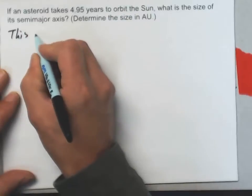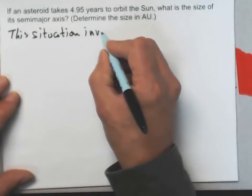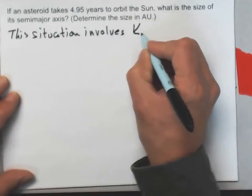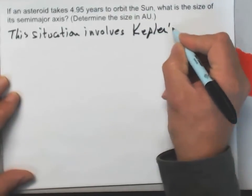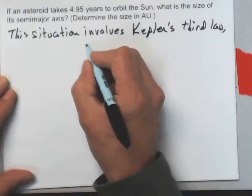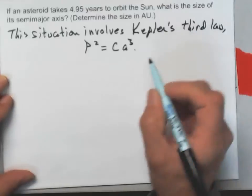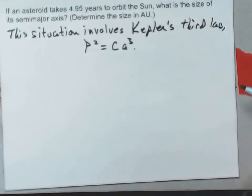This situation involves Kepler's third law, P squared equals CA cubed.